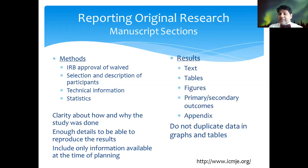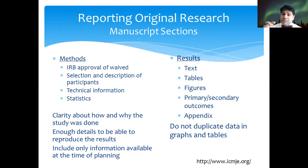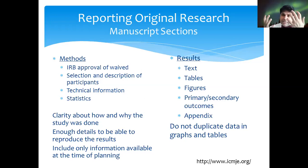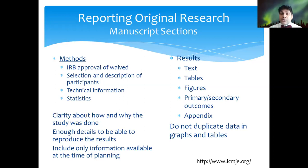Coming back to the results section — this is straightforward. As soon as you get your data from the statistician, get your tables ready. Write down the important points from the table as text, add tables and figures, and make sure you cover primary and secondary outcomes. Use an appendix for any results not part of your main manuscript. Do not duplicate data in graphs and tables — if you've already put data in a table, don't also put the same graph. Only use graphs and images that enhance your results, not duplications of table data.